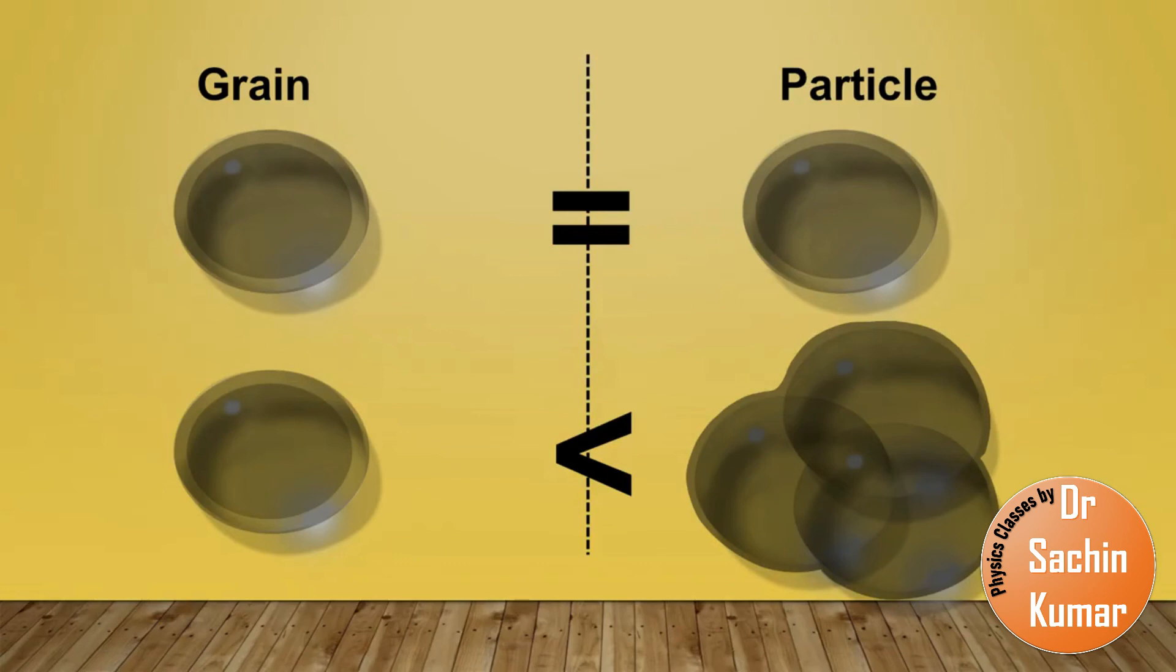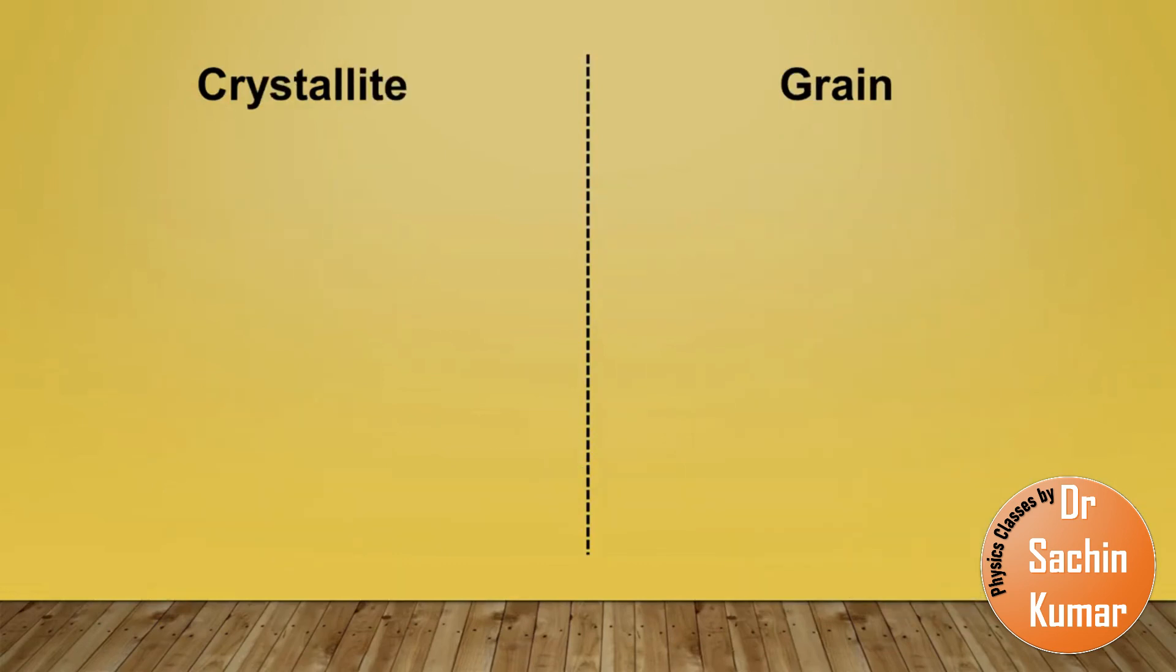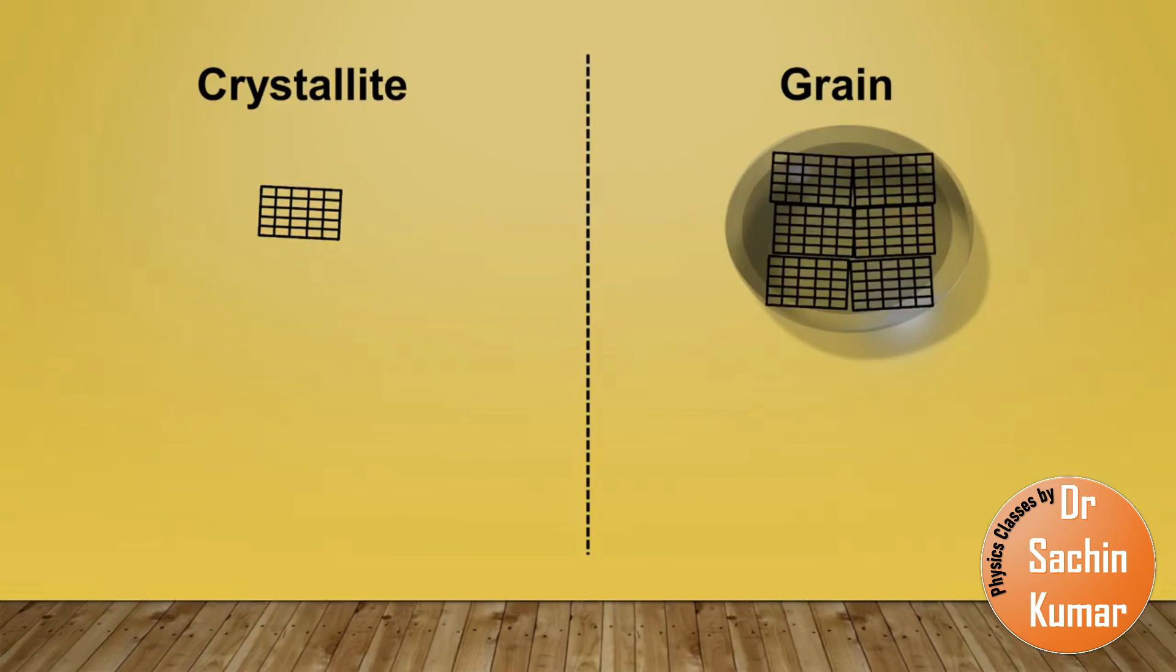Now let us discuss crystallite and grain. A crystallite by definition is a small part which diffracts coherently, and here we have a grain. But the thing is that a single grain may comprise many crystallites, so clearly in this case we can state that a crystallite is smaller than a grain. But in case of nanoparticles, crystallite is small but the grain is also small, so there are possibilities that in a single grain there is only one crystallite. In that case the crystallite size and the grain size are equal.